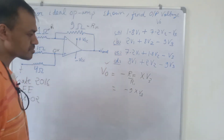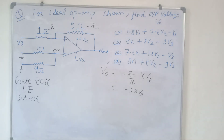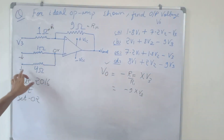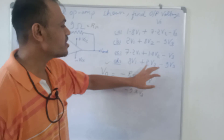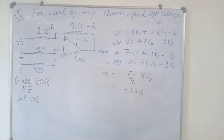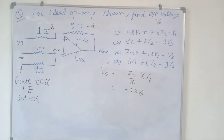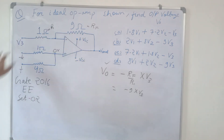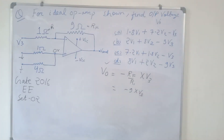Option D is correct. In the exam hall, you can solve this question in 30 seconds just by finding the output due to either V1 or V2, since their coefficients differ across all options. The combined result by superposition is 8V1 + 2V2 − 9V3, which is option D. Superposition theorem makes our work very easy when multiple voltages are given.